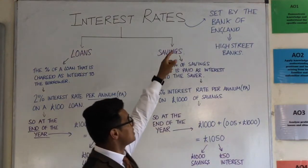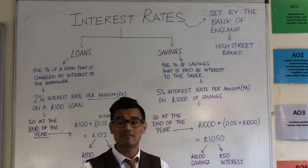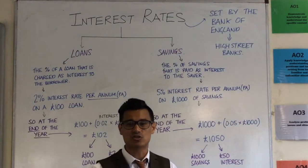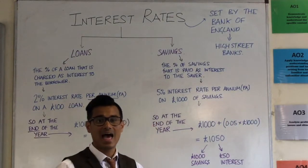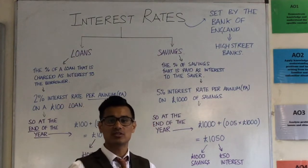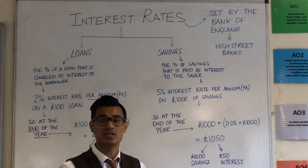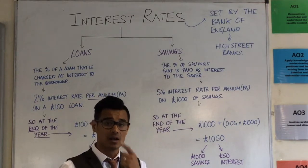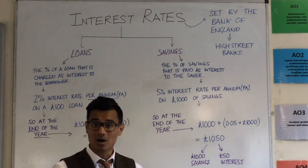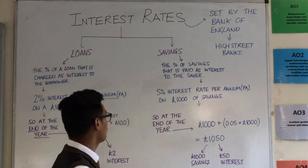Interest rates are set by the Bank of England. The Bank of England sets interest rates and what they set the interest rate to will affect what high street banks' interest rates are — high street banks like your Barclays, HSBC, etc.